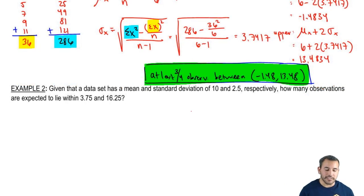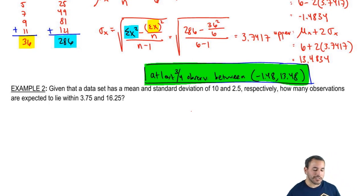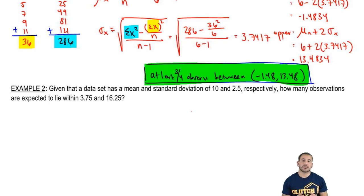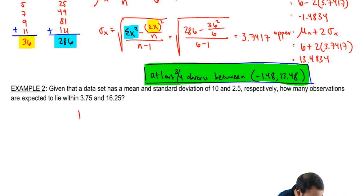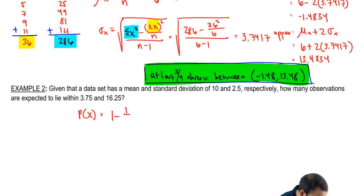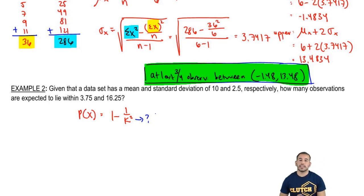For number two: given that a data set has a mean and standard deviation of 10 and 2.5 respectively, how many observations are expected to lie within 3.75 and 16.25? They're not asking us to find the interval — they're giving us the interval and asking what proportion of observations we'd expect to find within it. So we have to find a probability using Chebyshev's rule: 1 minus 1 over k squared. But what is k — the number of standard deviations above and below the mean?